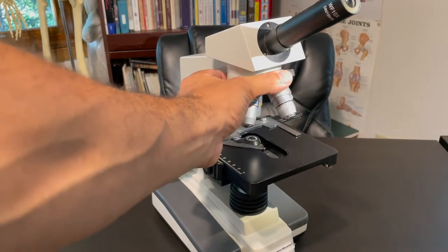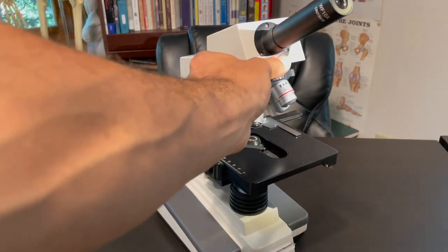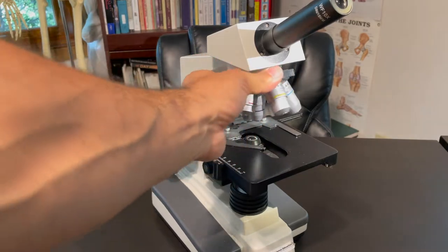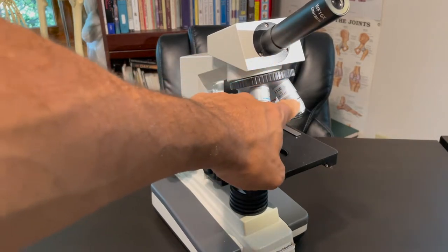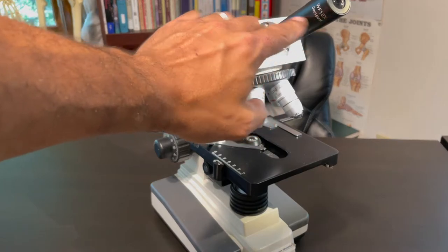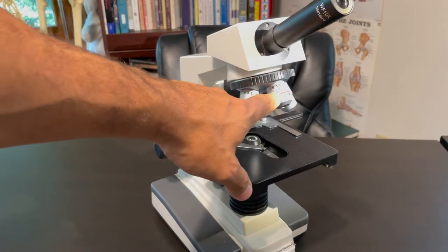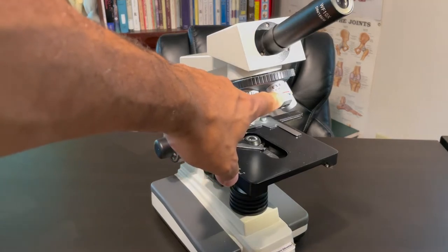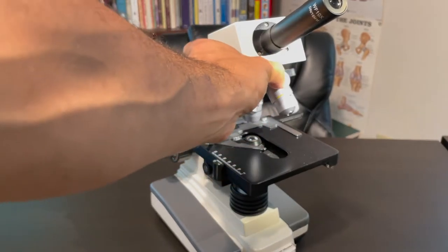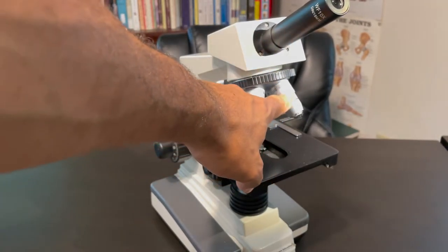We also have the nose, which is what I'm touching here. This is the nose that spins these objective lenses here. You have a red objective lens, yellow, blue, white, or sometimes black, and these have different magnifications. Just like this ocular lens has a magnification of 10x, these also have different magnifications. For example, the red is always 4x and the yellow is always 10x, the blue is always 40x, and the white or black is 100x.